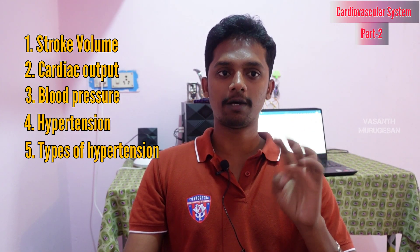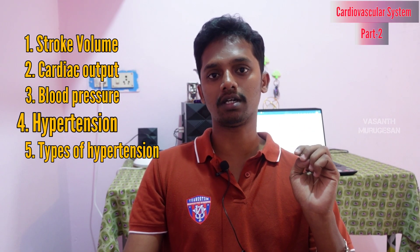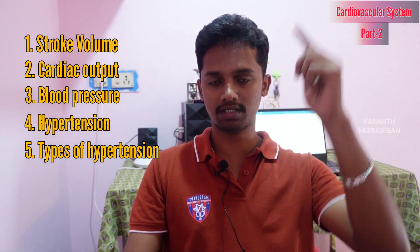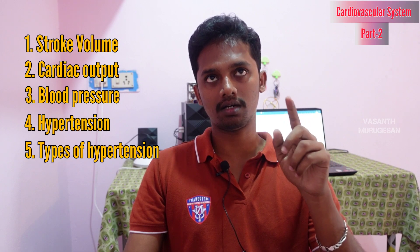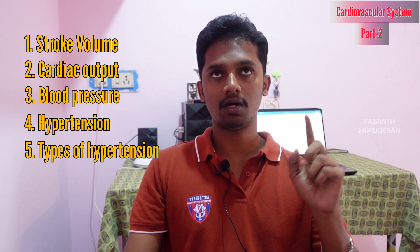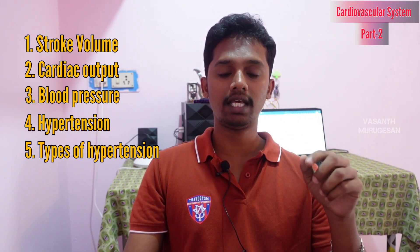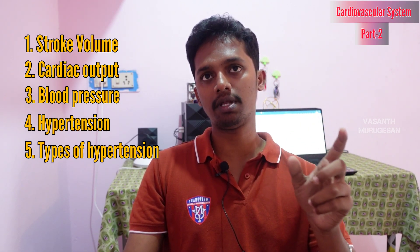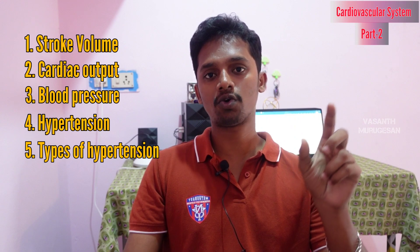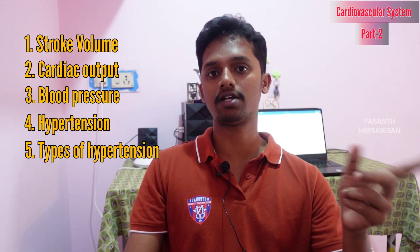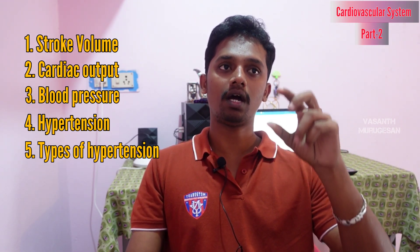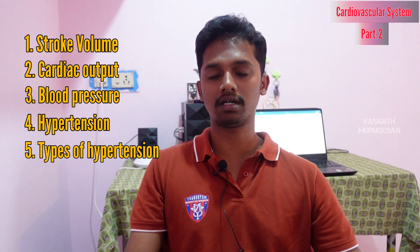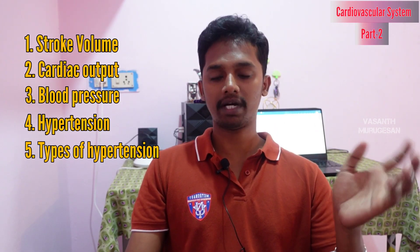The next term is hypertension. If the blood pressure exceeds normal levels, it is hypertension. The normal reading is 120 by 80 mmHg, where 120 is the systolic blood pressure and 80 is the diastolic blood pressure. If blood pressure exceeds this normal limit, that is hypertension.